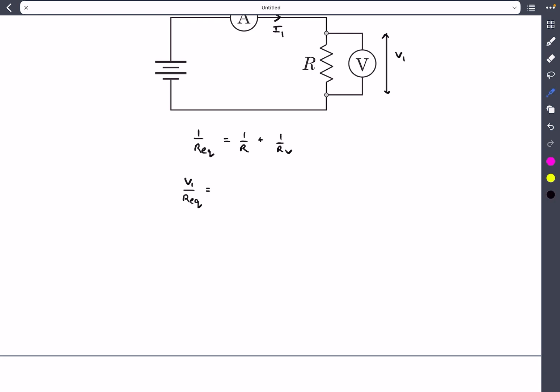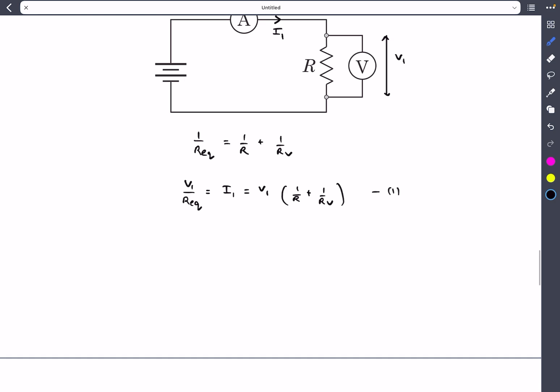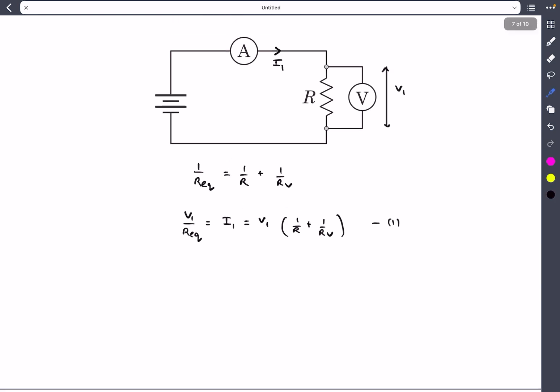We can say V₁/Rₑq equals the total current passing through them, which we know is actually I₁. So this will be V₁(1/R + 1/Rᵥ) = I₁. This will be our first equation.